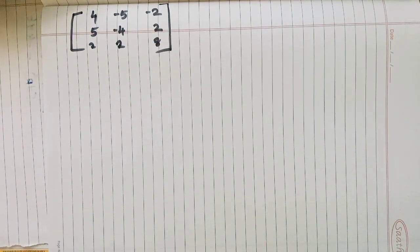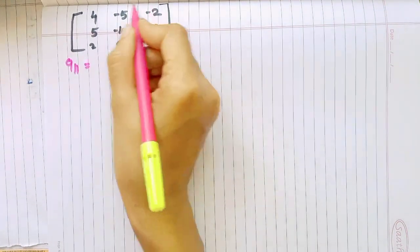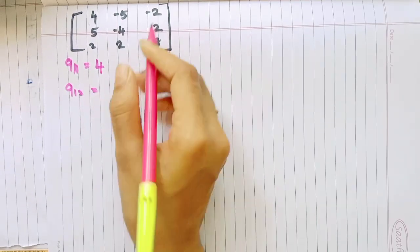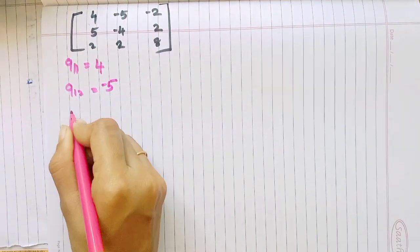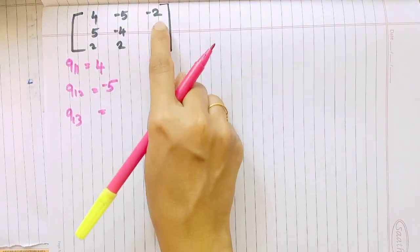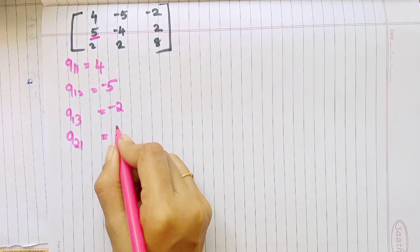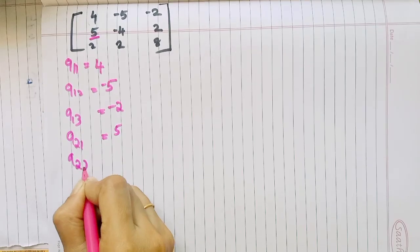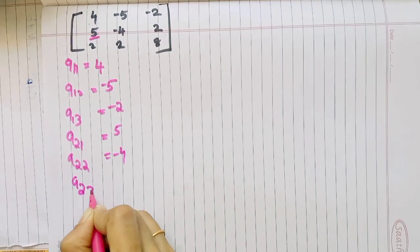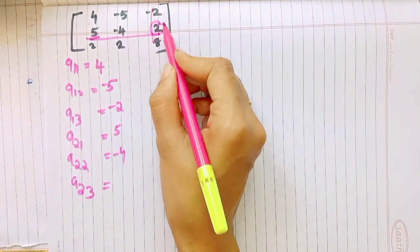We can do one element at a time. A11 is first row, first column — that is 2. A12 is first row, second column — that is negative 2. A13 is first row, third column — that is 3. A22 is second row, second column — that is negative 4. A23 is second row, third column — that is 2.